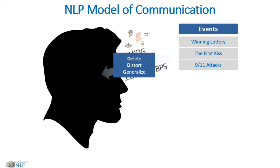Distortions happen when we make shifts in our sensory data by making misrepresentations of what's real. For example, this can happen when we mistake somebody for someone else, or when we imagine how somebody might look even before we have ever met them.